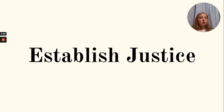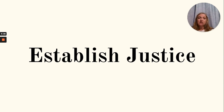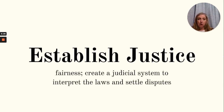The second goal is to establish justice. Under the Articles, we did not have a court system, so if there were disagreements between states or over the intent of a law, there was no one to settle that dispute. The Confederation Congress was supposed to handle it but didn't have the time. By establishing justice, we create fairness under the law, a judicial system to interpret laws and settle disputes — equality under the law.